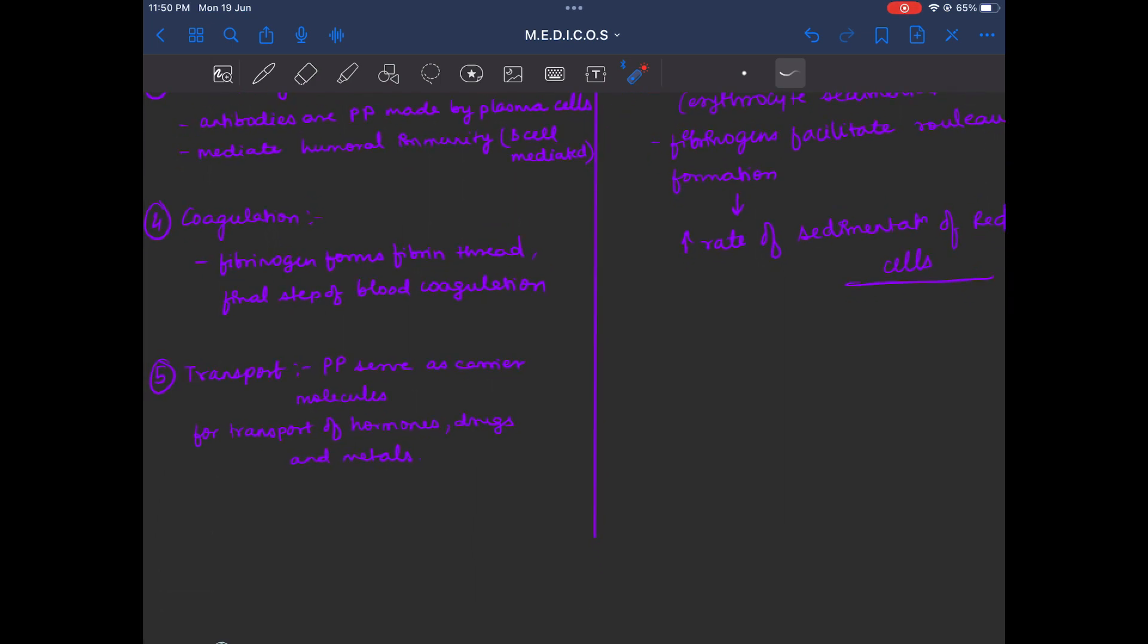Next is coagulation. Fibrinogen forms fibrin thread which is the final step of blood coagulation.